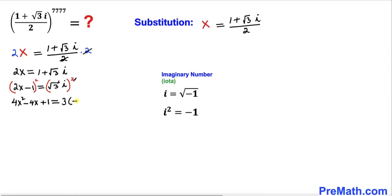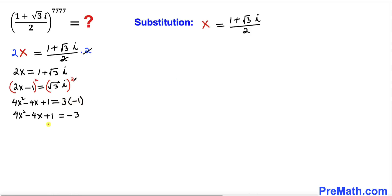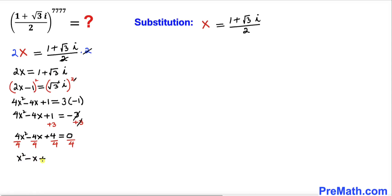Now let's add 3 to both sides. The left-hand side becomes 4x² - 4x + 4, and the right-hand side equals 0. All terms on the left are divisible by 4, so dividing through by 4 gives us x² - x + 1 = 0.